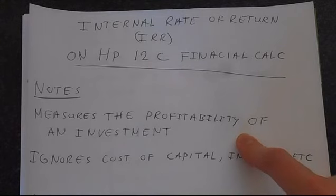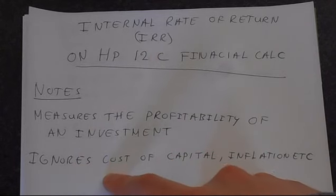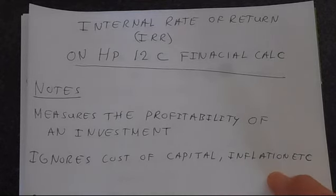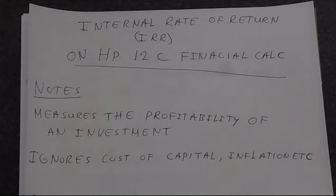Companies are looking to get an internal rate of return that is higher than the cost of capital. The actual calculation of the internal rate of return ignores the cost of capital and things such as inflation. That's why we call it the internal rate of return as opposed to the rate of return.